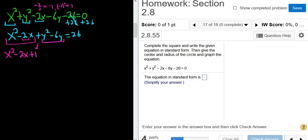Then you rewrite this piece here, plus y squared minus 6y. Same thing. You take this number, divide it by 2, and square it. So negative 6 over 2 is negative 3. Negative 3 squared is 9. Plus 9 equals 26.